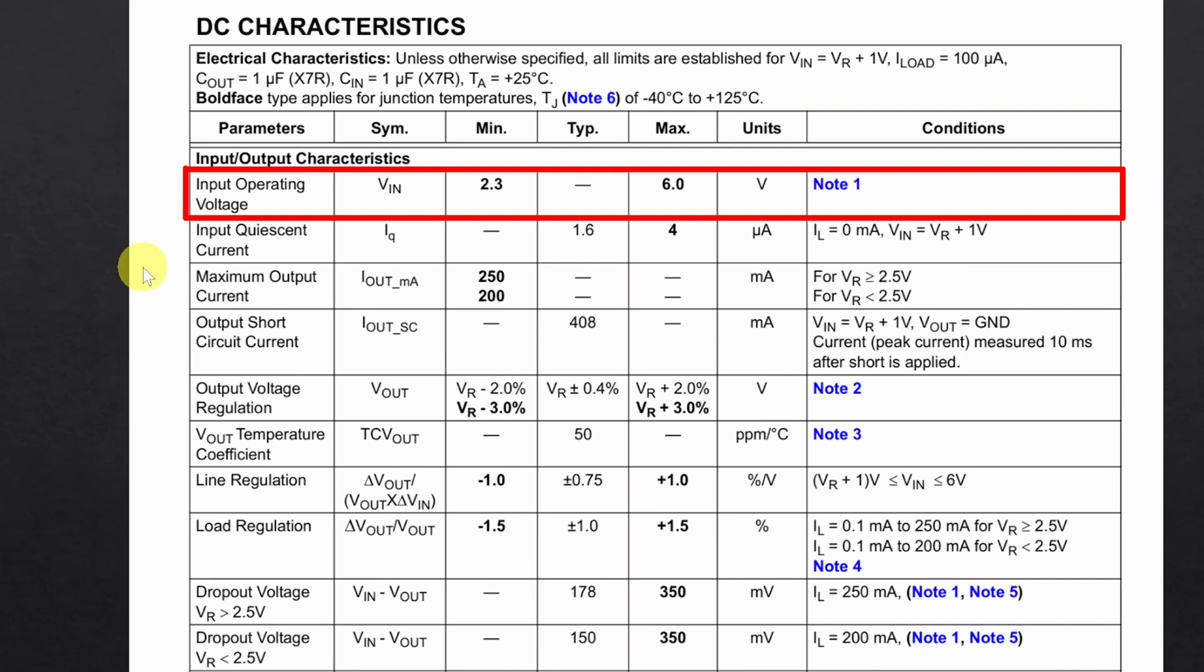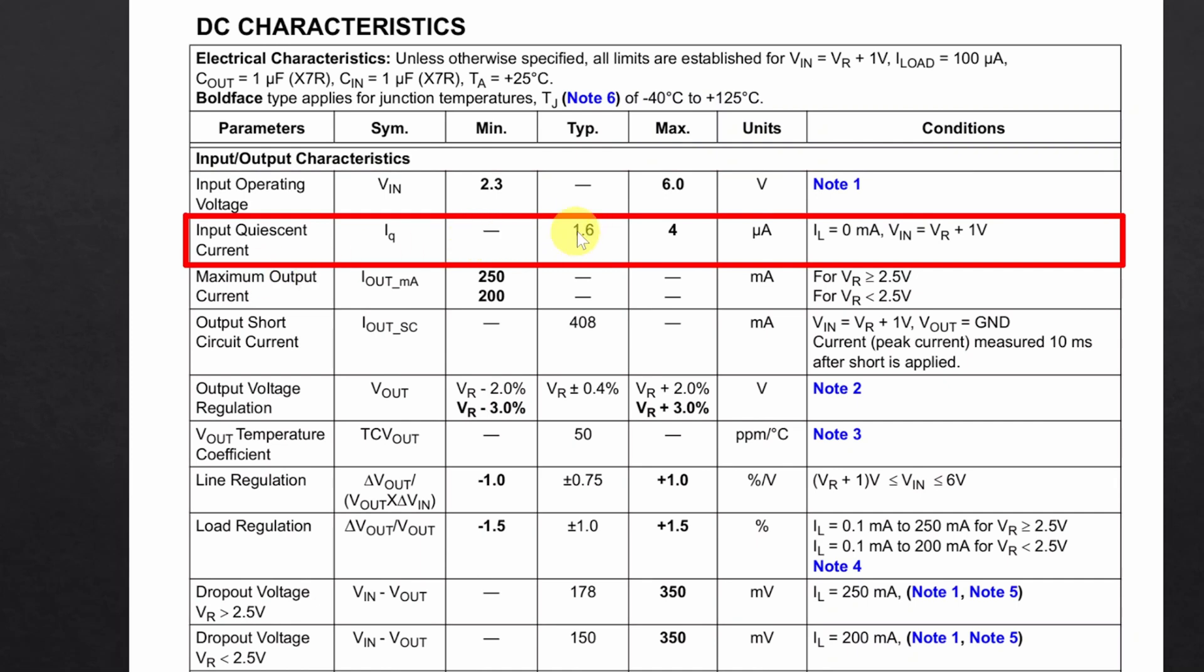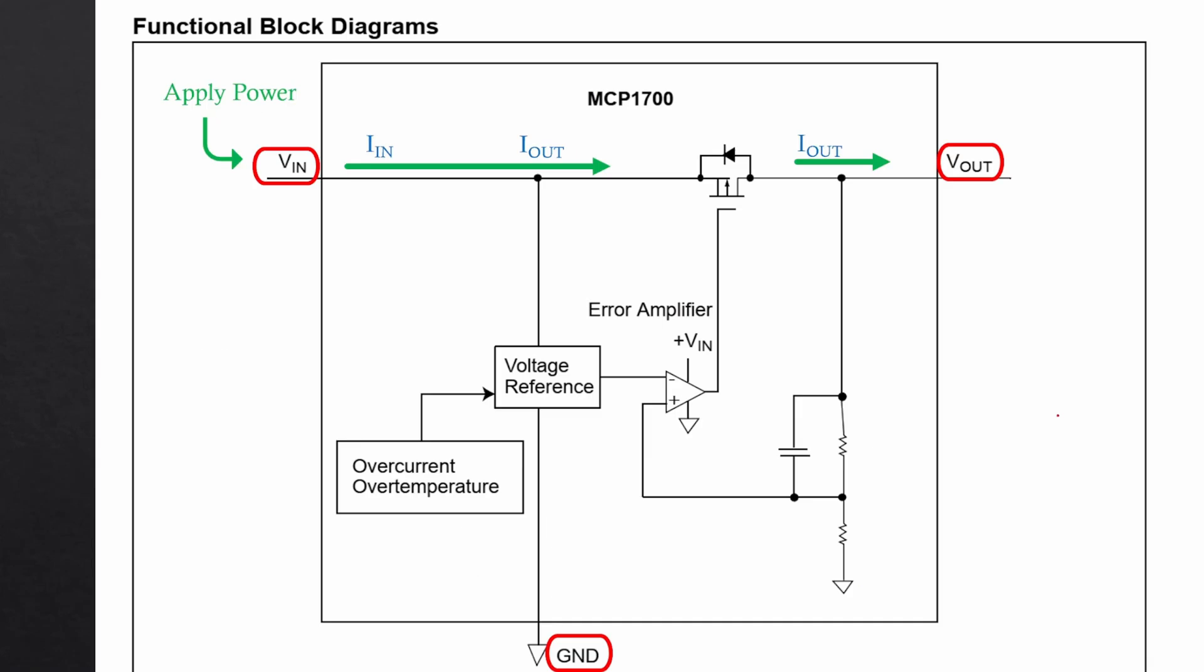Moving on to the next parameter, input quiescent current. Typical value for input quiescent current for this regulator is 1.6uA. Let's go back to the functional block diagram to discuss more about quiescent current.